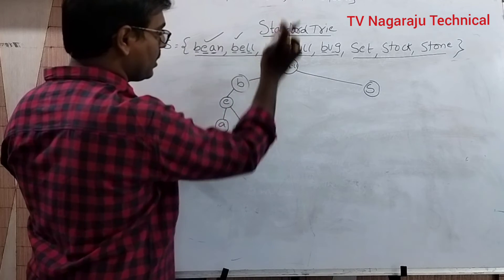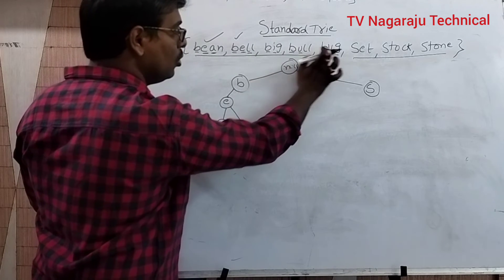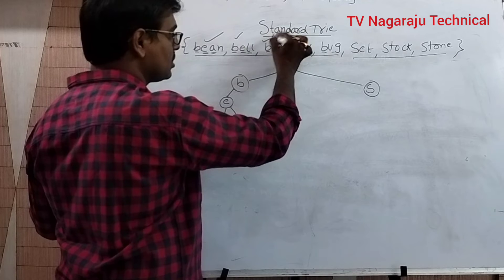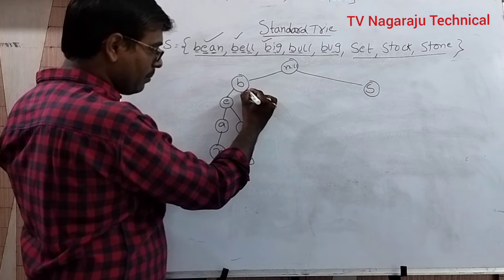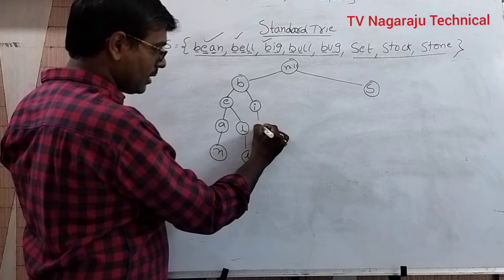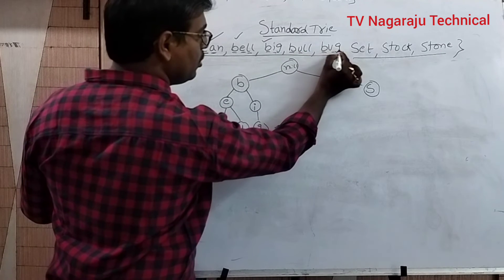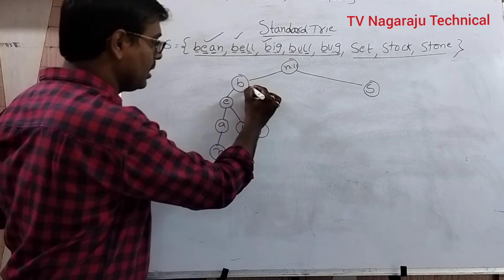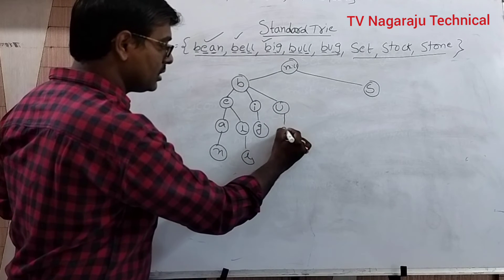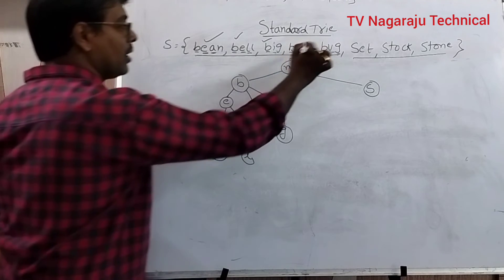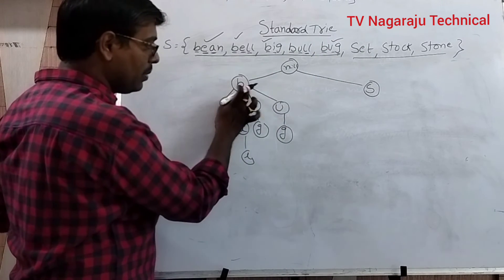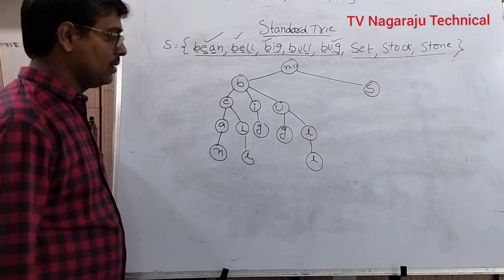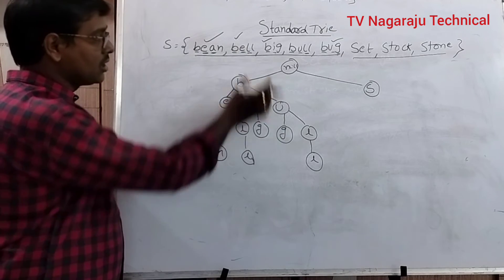Next, I is smaller than U among the remaining second characters. There is no other string starting with BI, so we construct Big (B-I-G) directly. Then for BU, the third characters are L and T — G is smaller than L, so we construct Bug first... actually Bull (B-U-L-L) and But (B-U-T) follow. BU is already common, so we add LL for Bull and then T for But. These are all the strings that start with B.